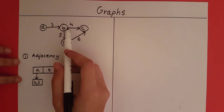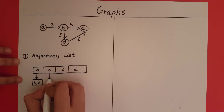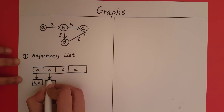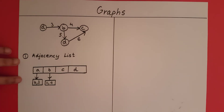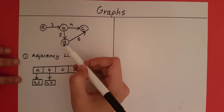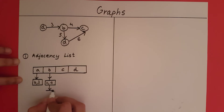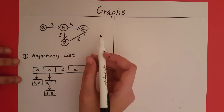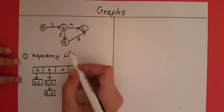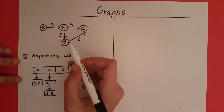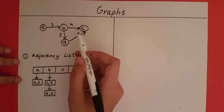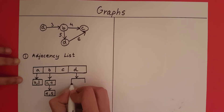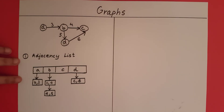Now we go to B. B is connected to C, so I add that to the list. B is connected to C with a weight of 4. B is also connected to D, so I add that with a weight of 5. Now I go to C. Is C connected to anything? No, so we won't add anything for C. Then we go to D. Is D connected to anything? Yes, D is connected to C. So we add C to D's list with a weight of 6. In this way we create an adjacency list.